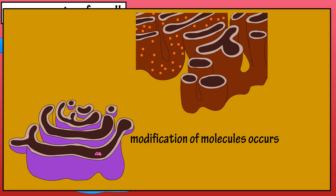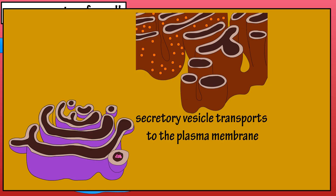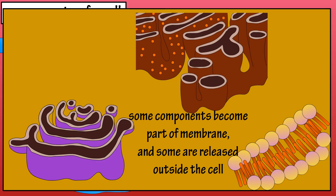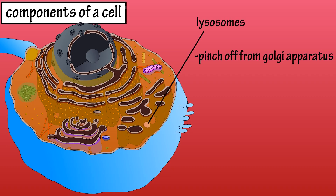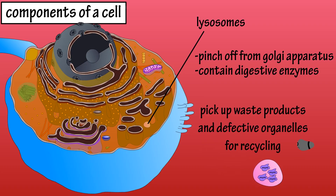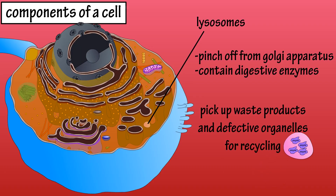After modification is complete, proteins are pinched off in another vesicle called the secretory vesicle, where many are sent to the cell's plasma membrane. At the plasma membrane, some components of the vesicle are released outside of the cell, and some vesicles become part of the plasma membrane itself. Lysosomes are membranous vesicles that pinch off from the Golgi apparatus and contain digestive enzymes. Lysosomes are like garbage bags, picking up cellular waste or defective organelles and recycling the contents. Lysosomal enzymes also help a cell destroy bacteria and viruses engulfed by the cell.